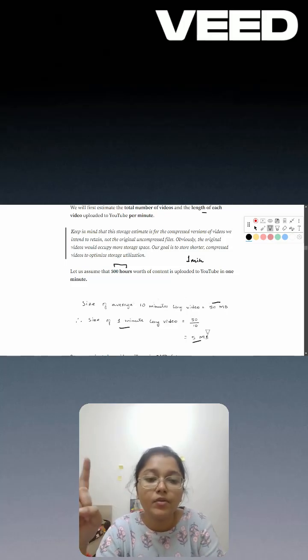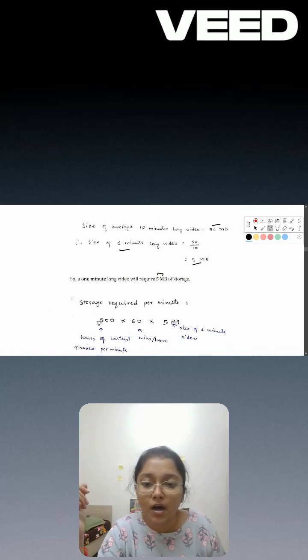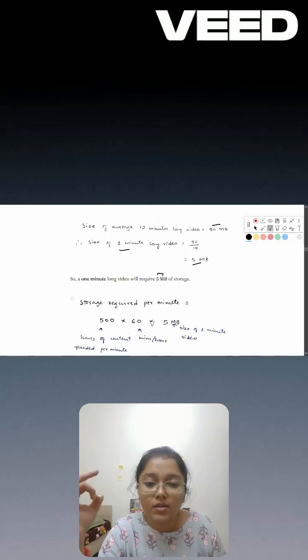So the size of one video is 5 MB. Now I want to say that if a one-minute video is taking 5 MB, how much will 500 hours worth of content uploaded every minute take? This is the calculation: we have 500 hours, 60 minutes in an hour, into 60, into the size of one minute video.